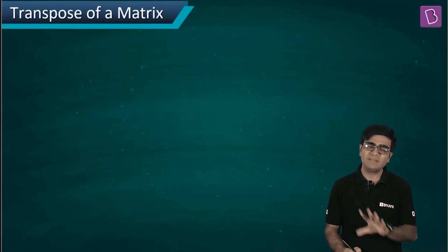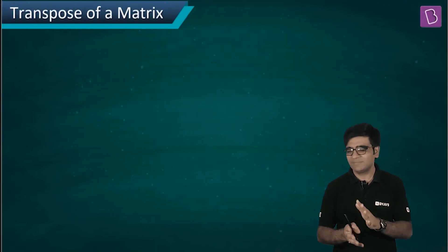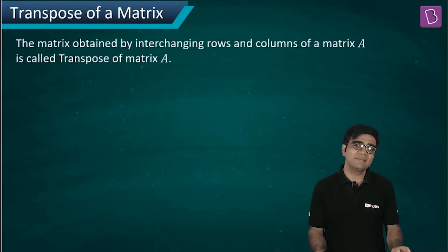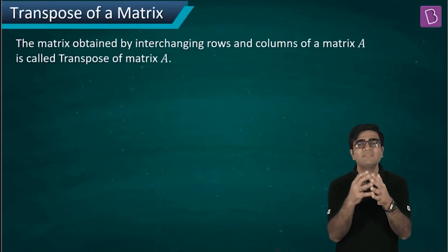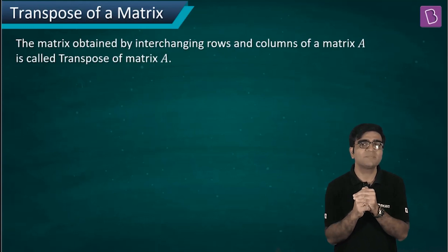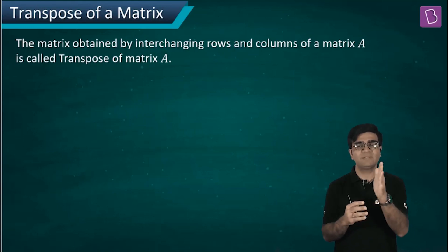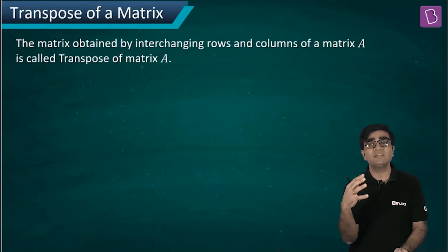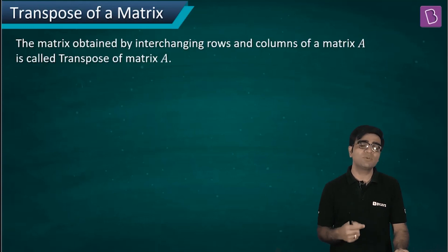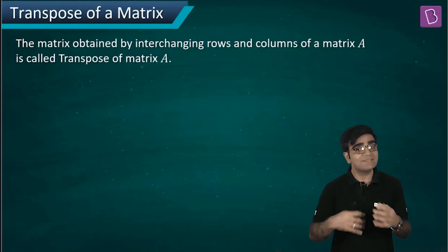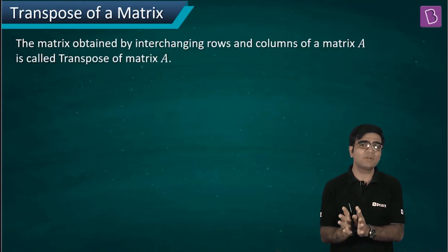Transpose of a matrix is a very simple phenomenon. If I have a given matrix with some rows and some columns, when I want to take the transpose, we intertwine the elements of rows and columns. The first row will become the first column, the second row will become the second column, and the third row will become the third column.